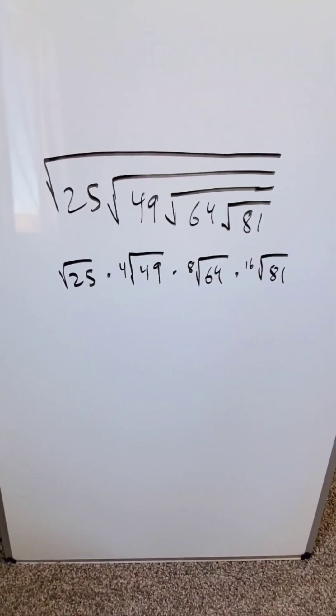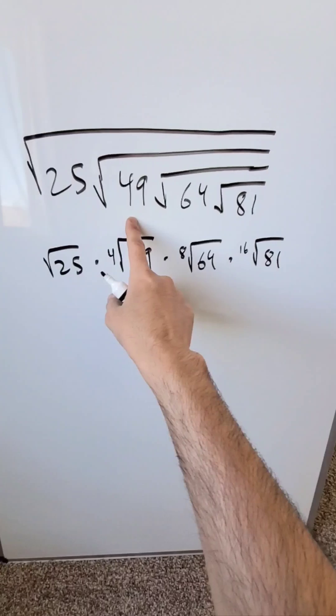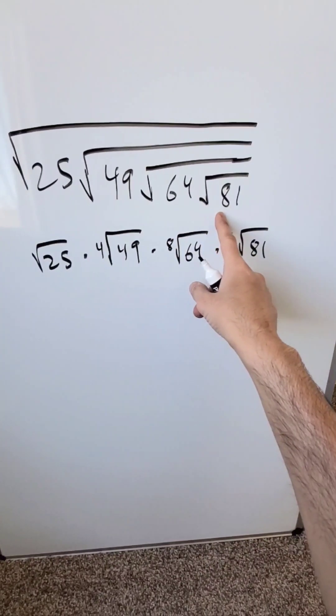I have here an exciting multi-root expression as you can see: square root of 25, within which is a root of 49, within which a root of 64, and within that a root of 81.